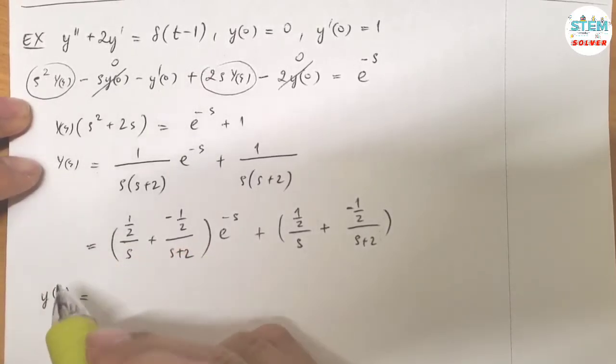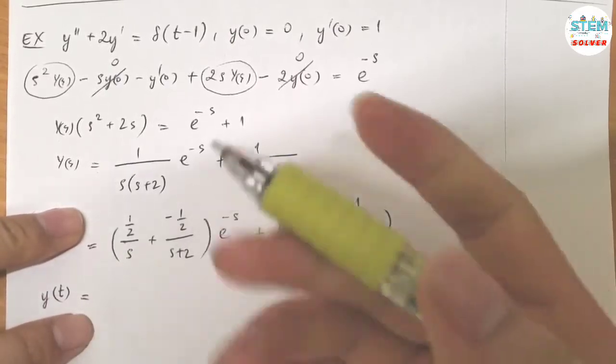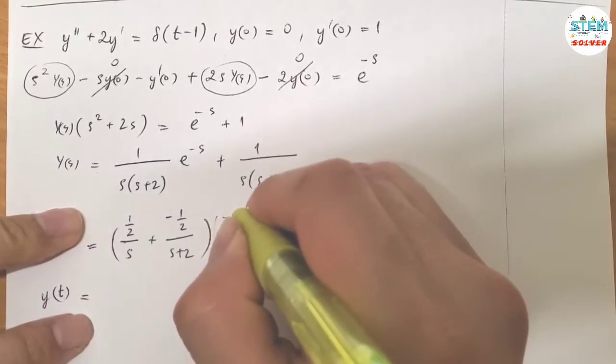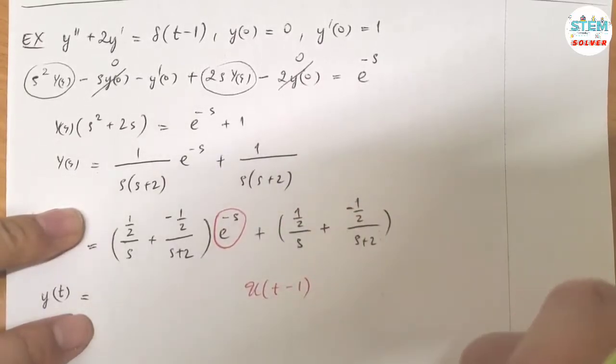Now apply the inverse on both sides. So on the left side, I have y of t. On the right side, I'm going to have... Let's do this first. That gives you u of t minus 1. Right?